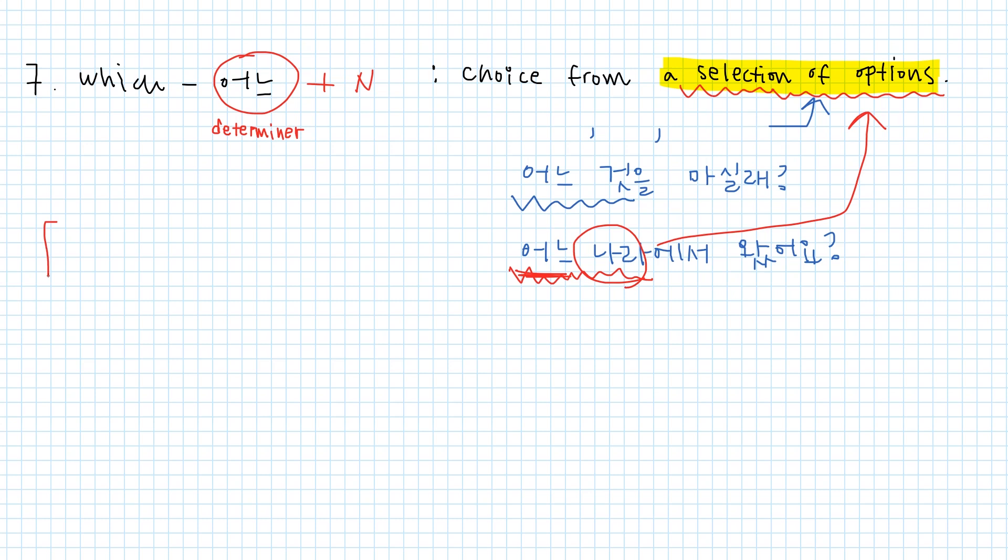So normally there are two ways to answer 어느 questions. 어느 것을 마실래? 나는 이것을 마실래. I'm gonna drink this. 이것, this, or 저것, 그것, that can be the answer to 어느 questions. Or proper nouns. For example, 어느 나라에서 왔어요? Where are you from? I'm from Korea. 한국에서 왔어요. The proper noun is used.